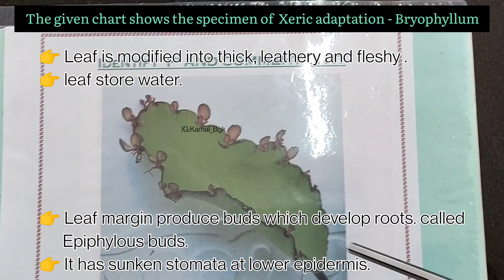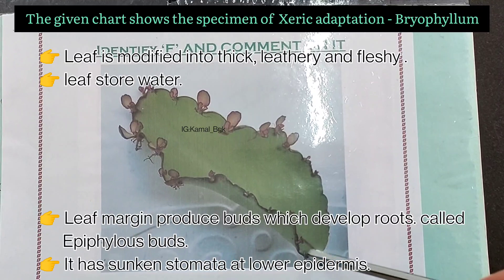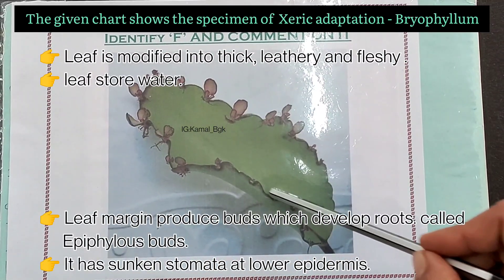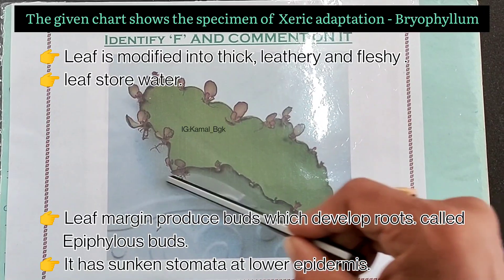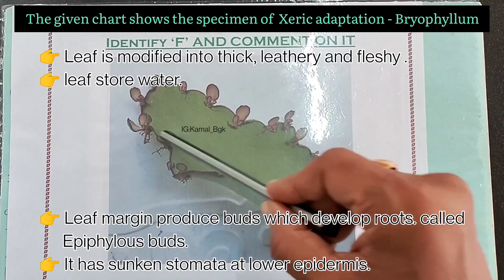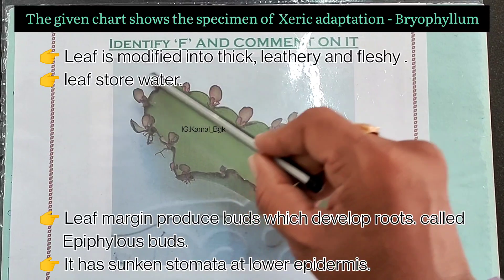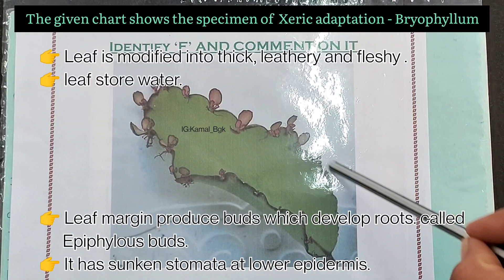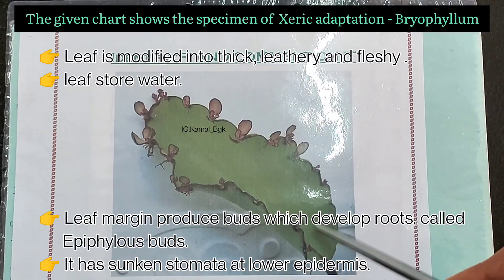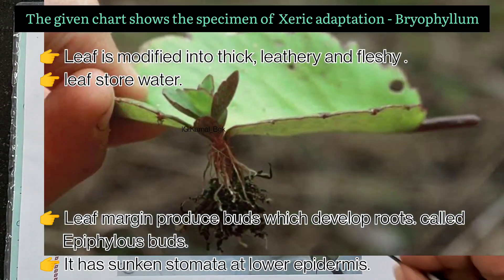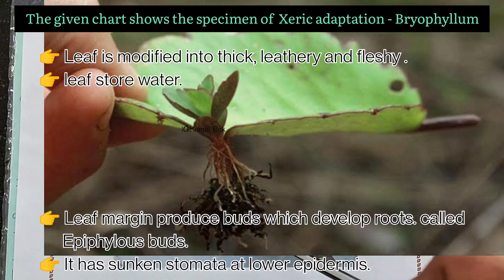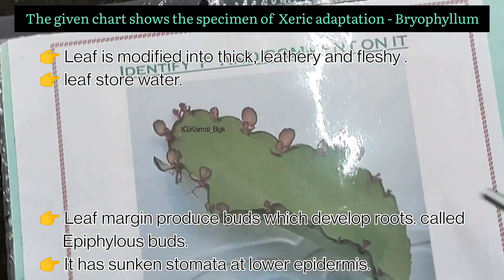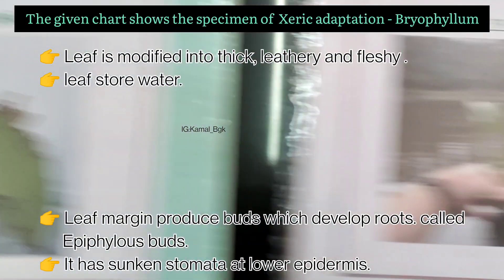The given chart shows the specimen of xeric adaptation, i.e., Bryophyllum. It has specialized modifications. The leaf is modified into thick, leathery and fleshy form. Leaf stores maximum water. Leaf margins produce buds which develop roots, called epiphyllous buds, and later form the daughter plant body. It has sunken stomata at the lower epidermis which prevents the loss of water.